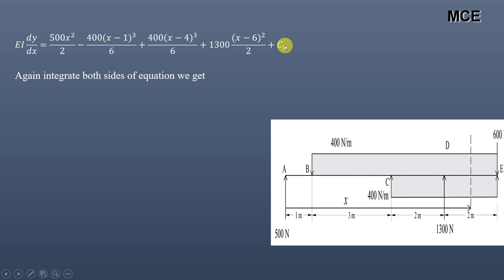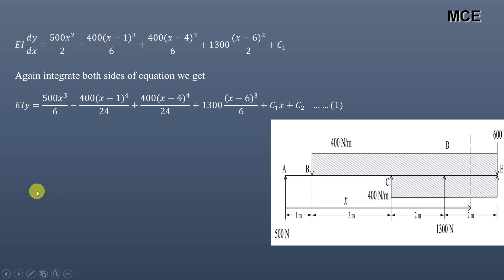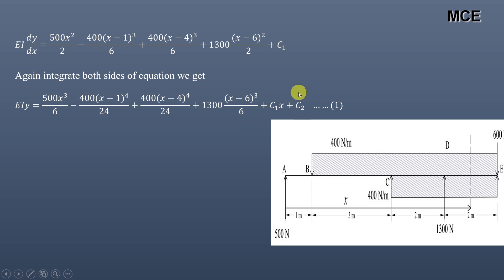Integrating again: EI·y = 500x³/6 − 400(x−1)⁴/24 + 400(x−4)⁴/24 + 1300(x−6)³/6 + C1·x + C2. This is the deflection equation. We now apply boundary conditions to find the constants C1 and C2.